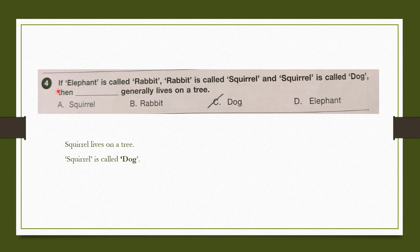Question number 4: If elephant is called rabbit, rabbit is called squirrel, squirrel is called dog — then what generally lives on a tree? We know squirrel lives on a tree, but squirrel is called dog. So our answer is option C, dog.